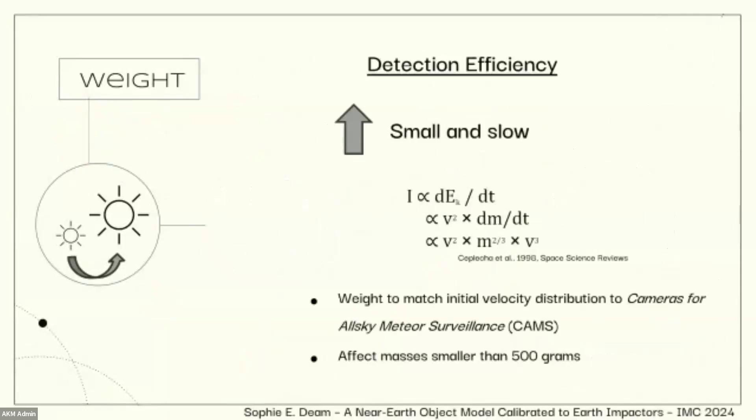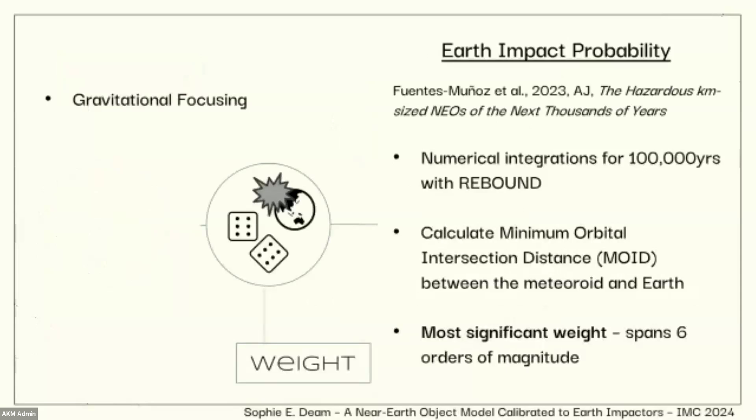The first thing I account for is detection efficiency. So I'm trying to boost up the numbers of the small and slow objects. So assuming that detection efficiency is just directly related to how bright the fireball was, that would be the intensity as a function of velocity to the power of 5 and mass to the power of 2 over 3. I weighted a subset of fireball data until it matched the de-biased distributions of the CAMS data from Guinness Skin's 2016 paper, and I found that this weighting was affecting masses smaller than 500 grams.